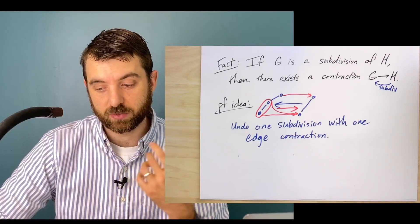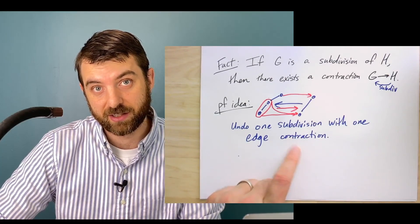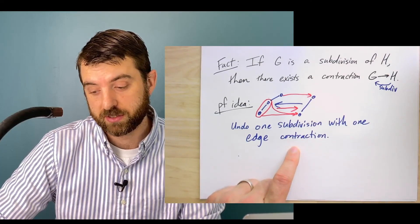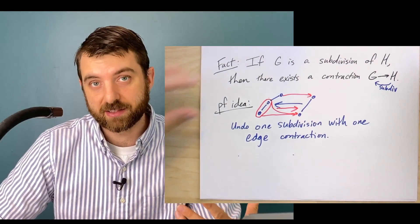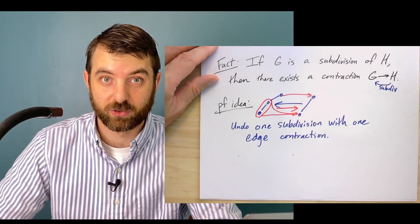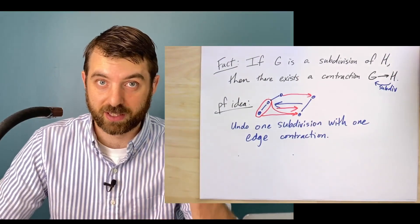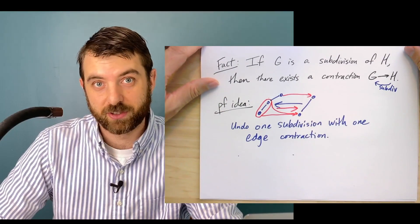And now we're going to do that not just with this particular kind of contraction, the kind that undoes a single subdivision, but we're going to do it with this more general class of contractions. And that's going to give us our introduction to graph minor theory, which is one of the big developments of graph theory in the latter half of the 20th century.